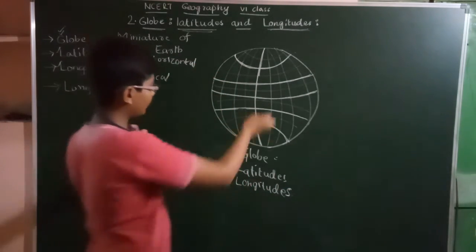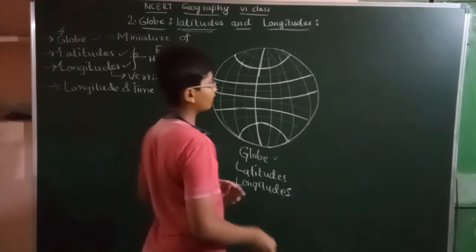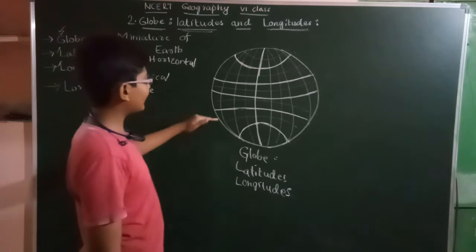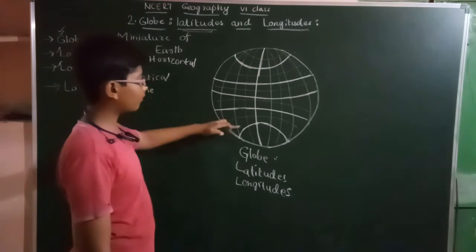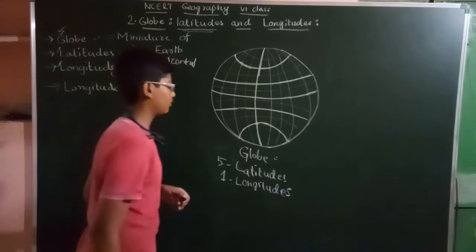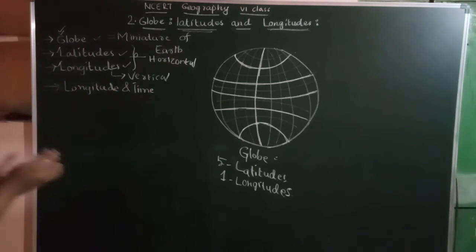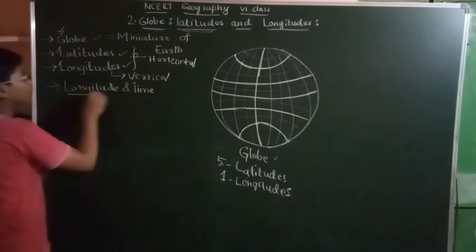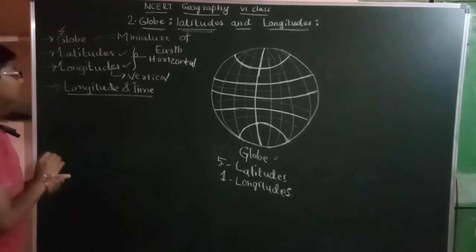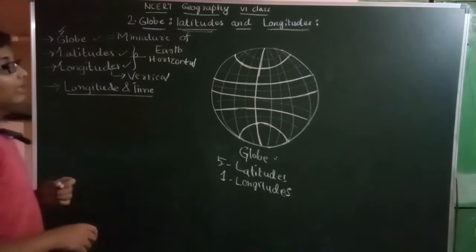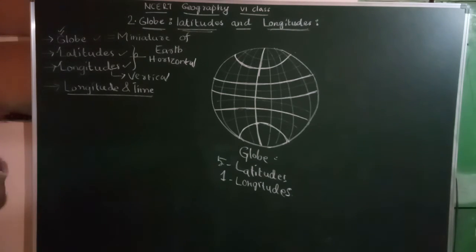There are 5 important latitudes and 1 important longitude. Let's see them carefully. We'll also learn an interesting thing — how to find the time of a place using longitudes and latitudes. First, let's learn about the important latitudes and important longitudes.